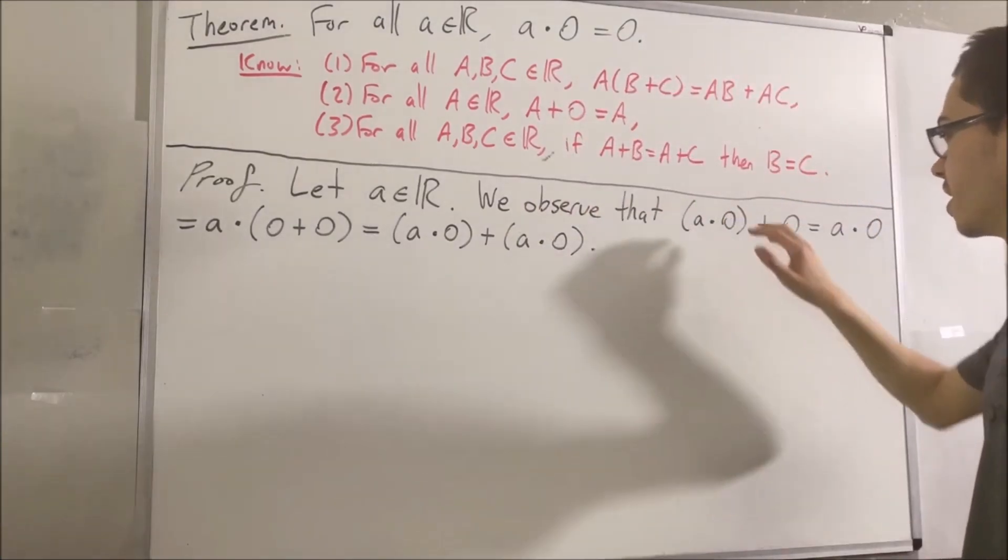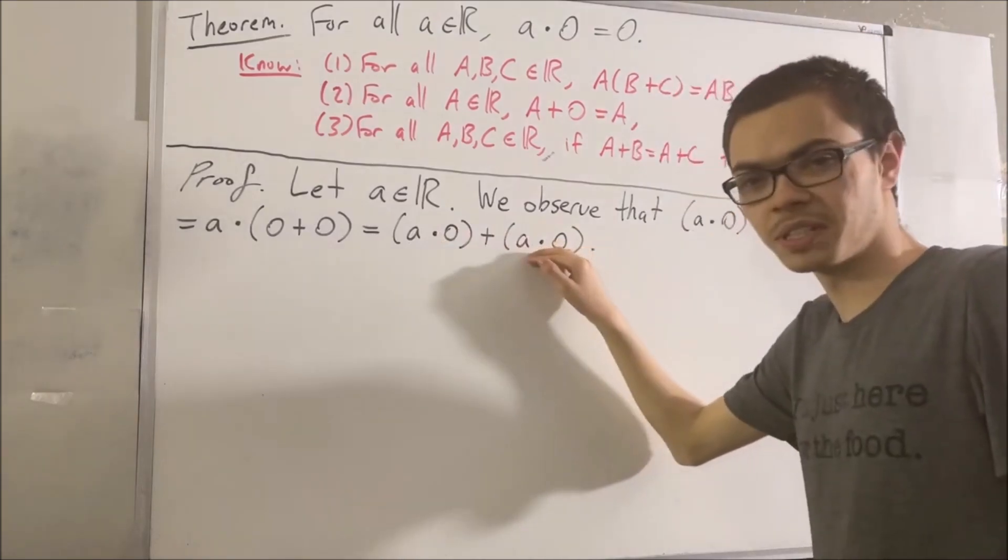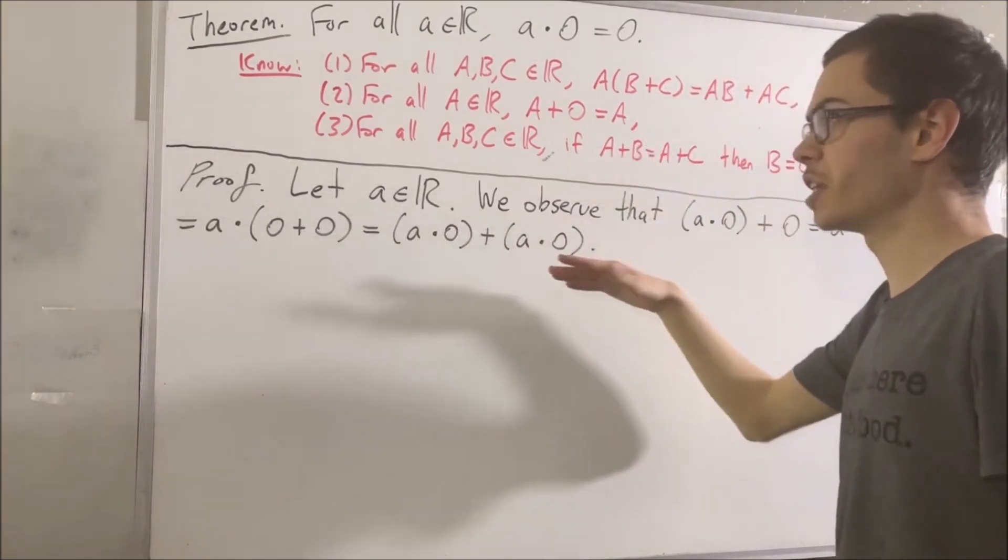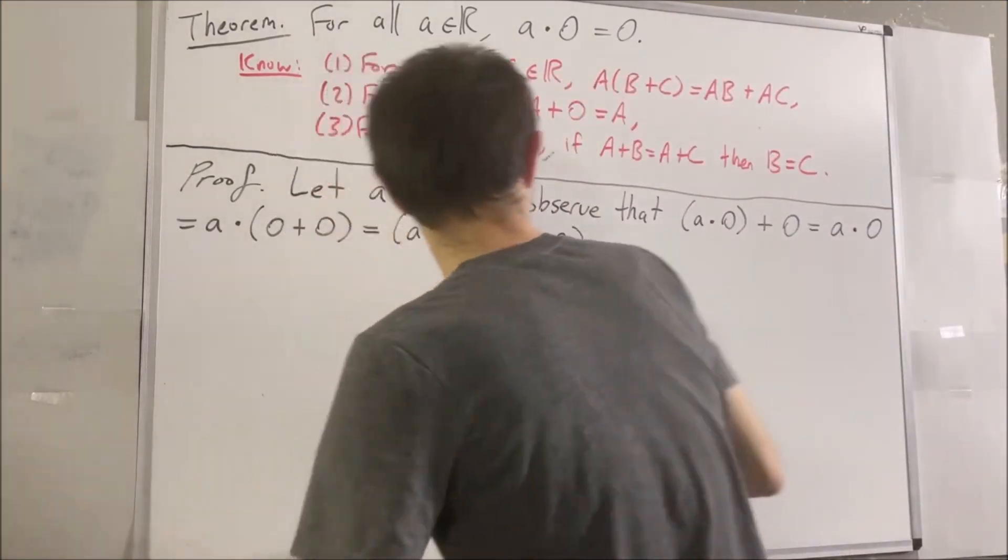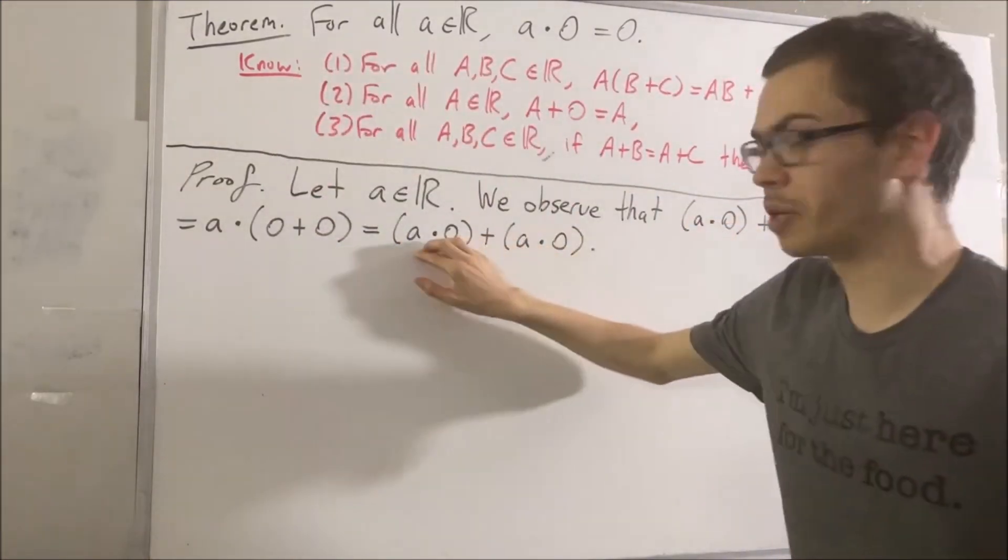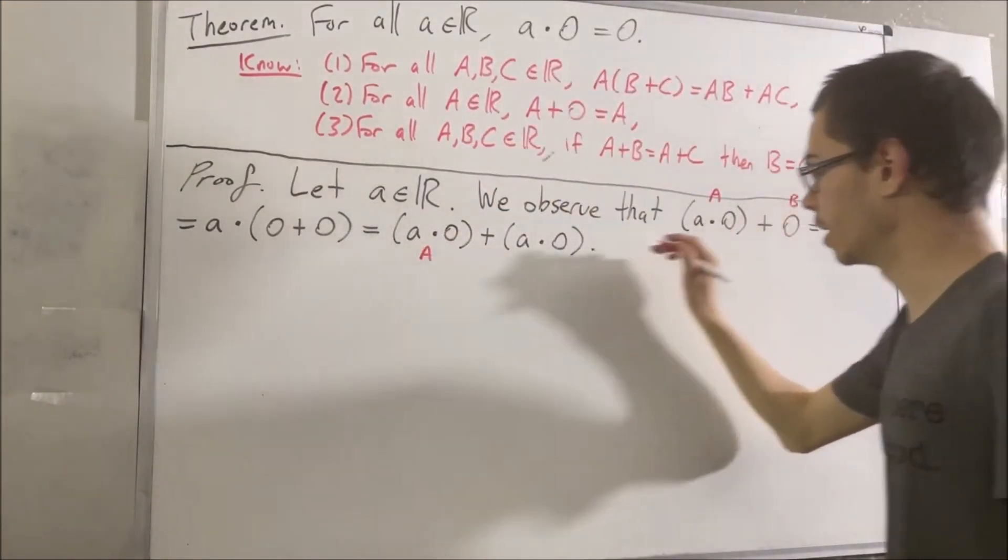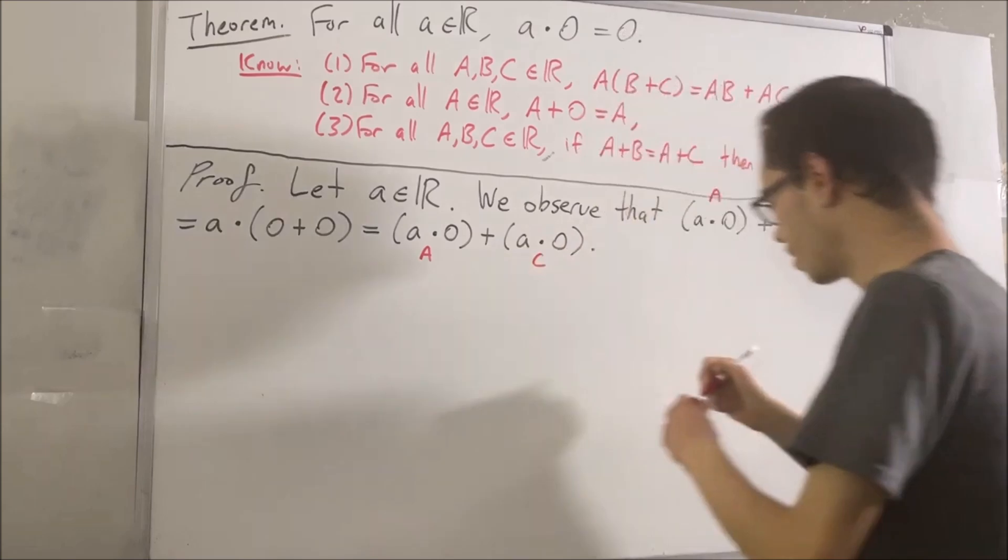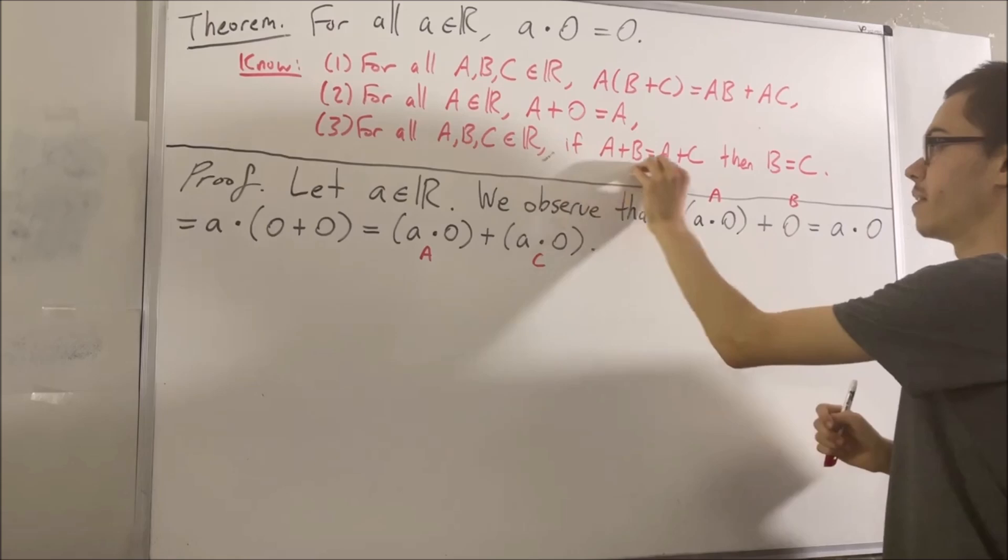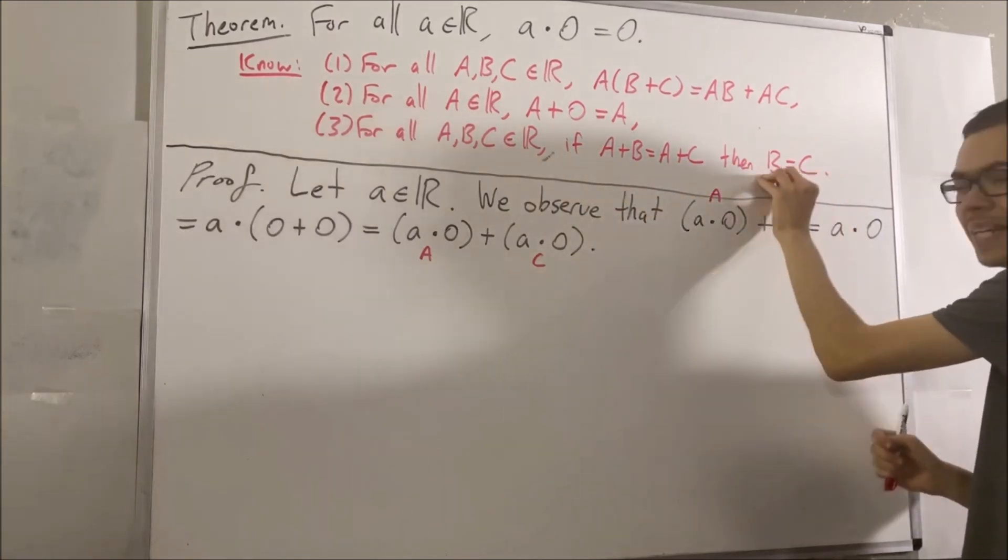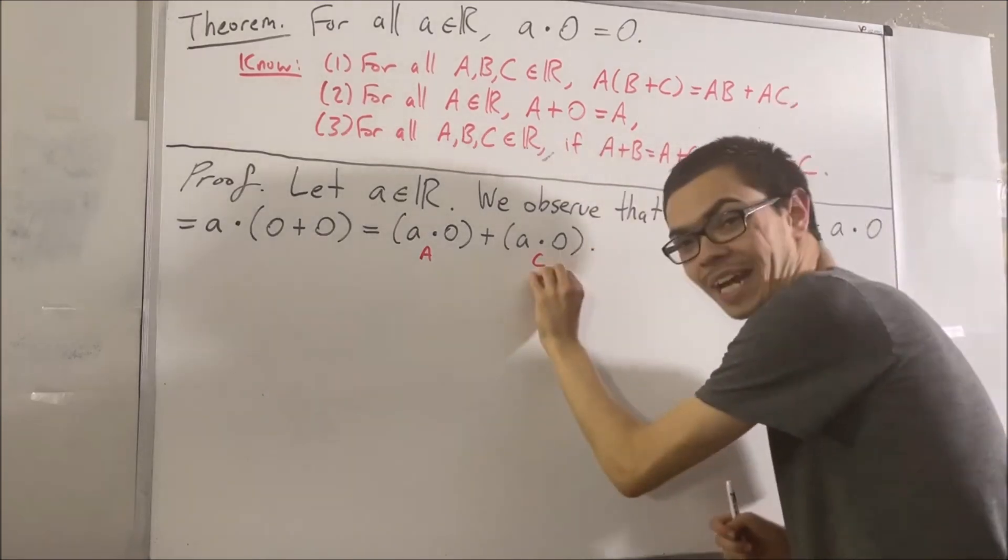So notice, a times zero plus zero is equal to a times zero plus a times zero. And so at this point, now we're going to apply the third fact. If we call a times zero capital A, call zero capital B, and a times zero capital C, we see that A plus B is equal to A plus C. Well, by this fact, it follows that B is equal to C. So really, we had that zero is equal to a times zero.